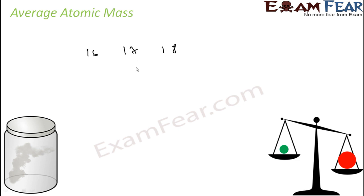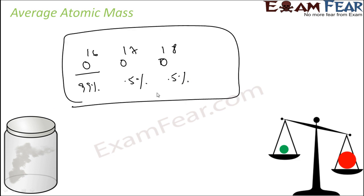Oxygen-17, oxygen-18. Let's suppose oxygen-16 is 99%, oxygen-17 is 0.5%, and oxygen-18 is 0.5%. I don't know the exact figures, just putting some values. If you talk about average atomic mass, the atomic mass of any oxygen sample will have 99% oxygen-16, so it'll have 99/100 × 16 plus 0.5% of 17 plus 0.5% of 18.